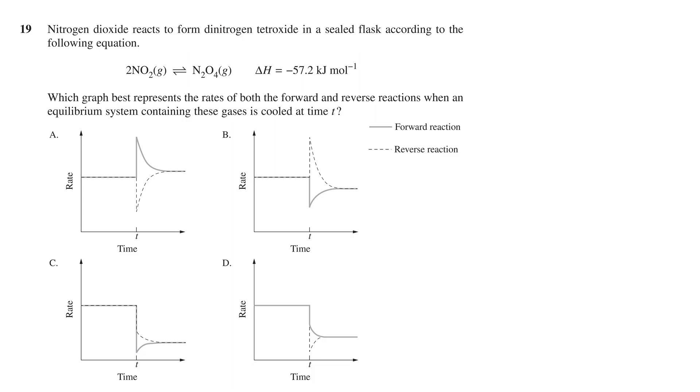Question 19 states: Nitrogen dioxide reacts to form dinitrogen tetraoxide in a sealed flask according to the following equation. The reversible reaction is then listed with its delta H or change in enthalpy value given as negative 57.2 kJ per mole. The question then asks, which graph best represents the rates of both the forward and reverse reactions when an equilibrium system containing these gases is cooled at time t? We then see four different rate versus time graphs with forward reactions labeled with a solid line and reverse reactions with a dotted line.